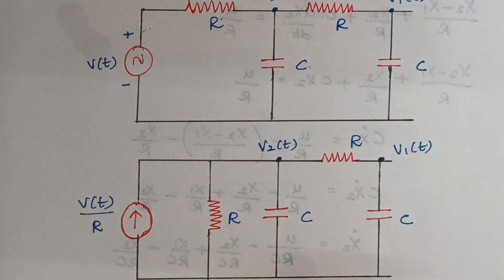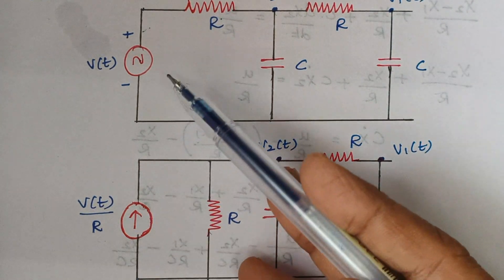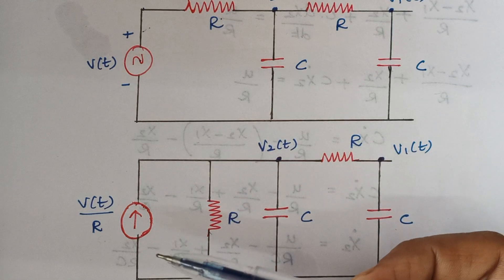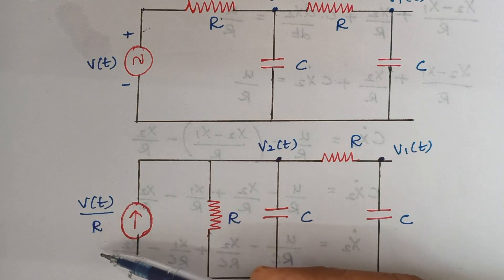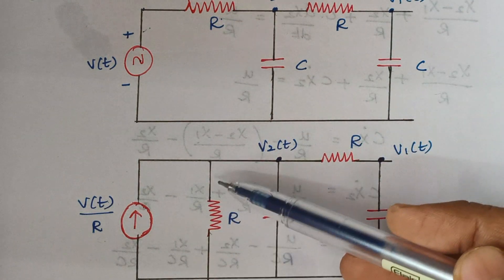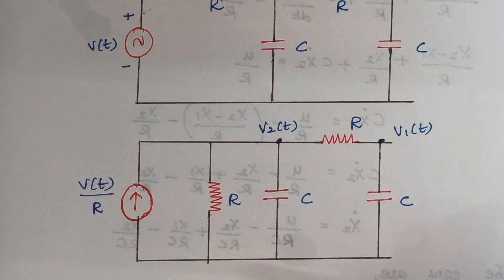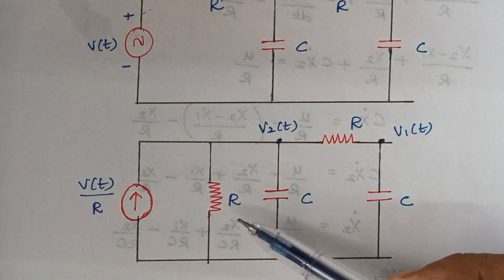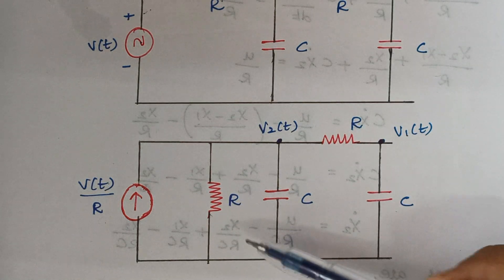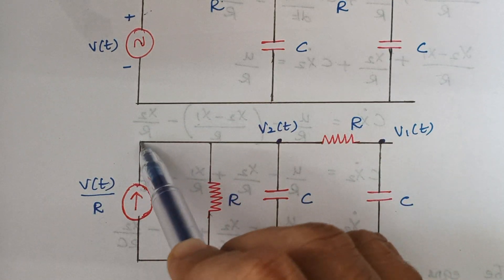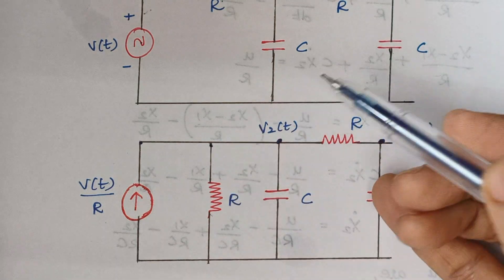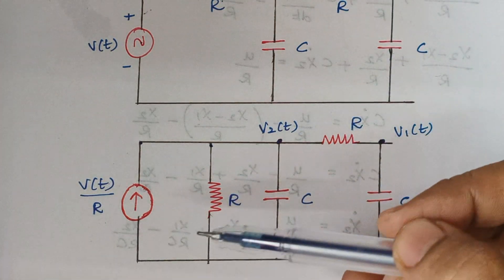The voltage source has become a current source. As per Ohm's law, I = V/R, so V/R denotes the current. The resistor in series becomes a resistor in parallel. In a parallel connection, the starting and ending points of the elements are the same — the starting point of V(t)/R and the starting point of this resistor are the same, so this is a parallel connection.